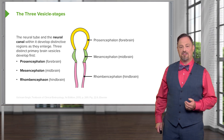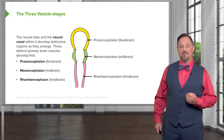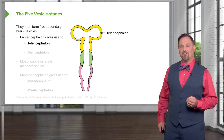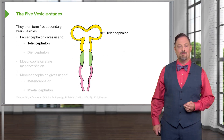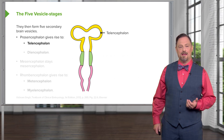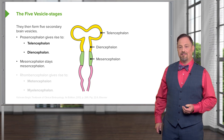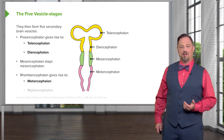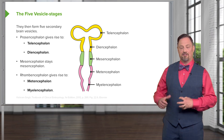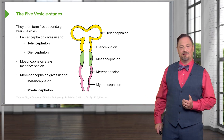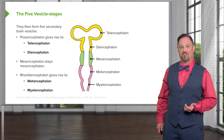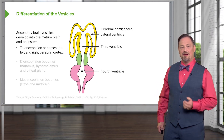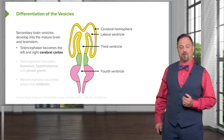This three-vesicle stage gives way to five vesicles. The prosencephalon splits to become the telencephalon and the diencephalon. The mesencephalon stays the mesencephalon — it's still in the middle. The rhombencephalon becomes the metencephalon and the myelencephalon. Notice that the telencephalon has two bulges going off laterally, which is vitally important because those are going to form the lateral ventricles.